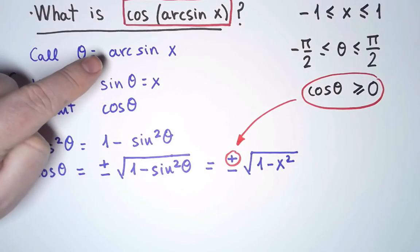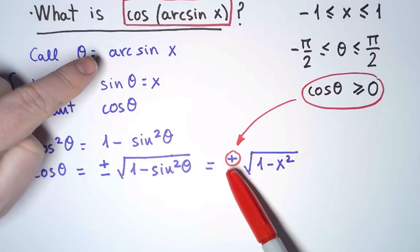Notice that if I had defined arcsine as the inverse of any other restriction of sine, I might be getting a different sign here.